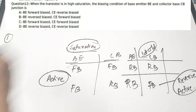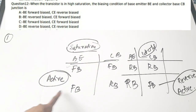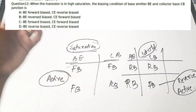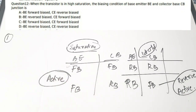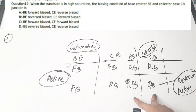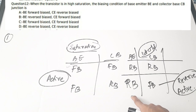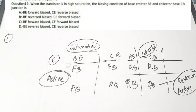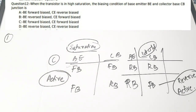To summarize the four transistor states: active — base-emitter forward biased, collector-base reverse biased, transistor works as an amplifier; saturation — both junctions forward biased; cutoff — both junctions reverse biased; reverse active — base-emitter reverse biased, collector-base forward biased. The question asks only about saturation, so the correct answer is option C: both junctions forward biased.